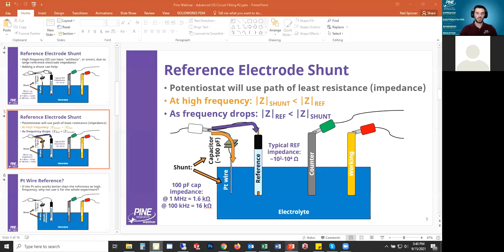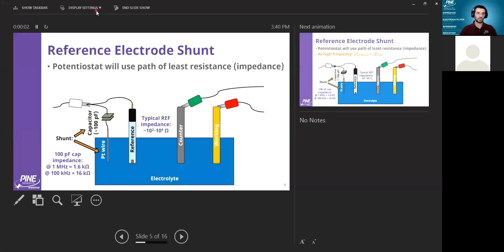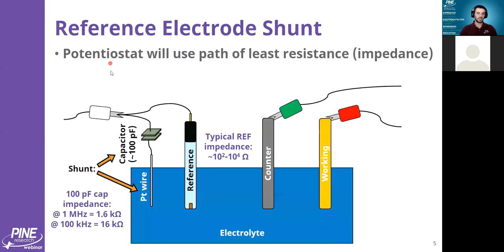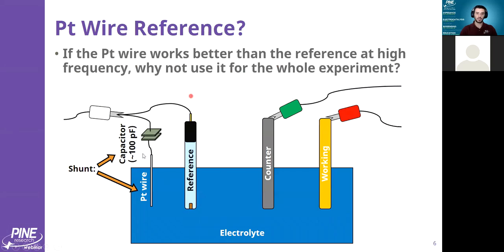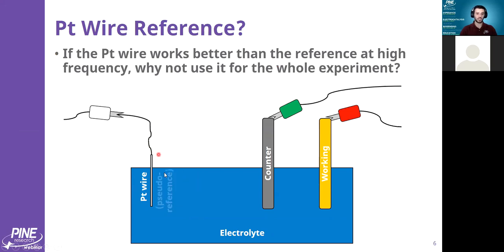The last point to make about this, which may occur to some people, is that if I have this situation where my reference electrode is causing problems at high frequency and using this platinum wire basically fixes it, why don't I just use the platinum wire for the whole experiment? Why do I even bother with this shunt? I can just use this platinum wire and then I won't have any problems, right? I won't have any of that artifact from that frit.